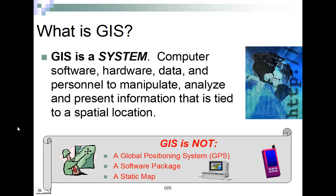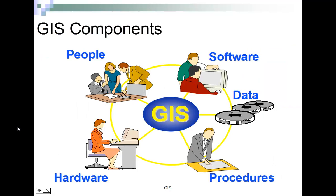GIS is hardware, software, data, and personnel — you guys particularly — doing the techniques so we can manipulate, analyze, and present spatial information that's tied to spatial location. We'll talk about the differences between those.